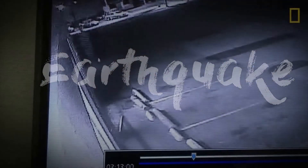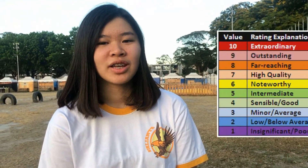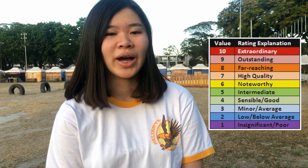Earthquake is the sudden and violent shaking of the ground, sometimes causing great destruction as a result of movements within the Earth's crust or volcanic action. Earth is an active place and earthquakes are always happening somewhere. Earthquakes can vary in size from those so weak that they cannot be felt to those violent enough to throw people around and destroy entire cities. On average, magnitude 2 and smaller earthquakes occur several hundred times a day worldwide.